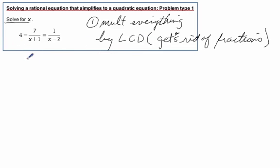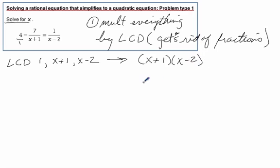So first thing we need to do is figure out what that least common denominator is. We've got a 1 here, we've got an x plus 1, and we've got an x minus 2. So the least common denominator is going to be x plus 1 times x minus 2. So it's just one of each of those, and of course the 1, that's pretty easy.